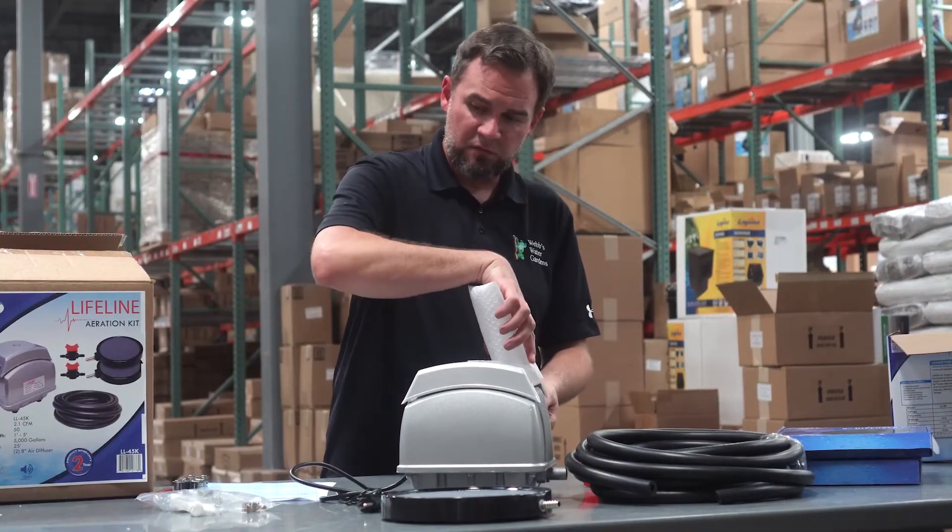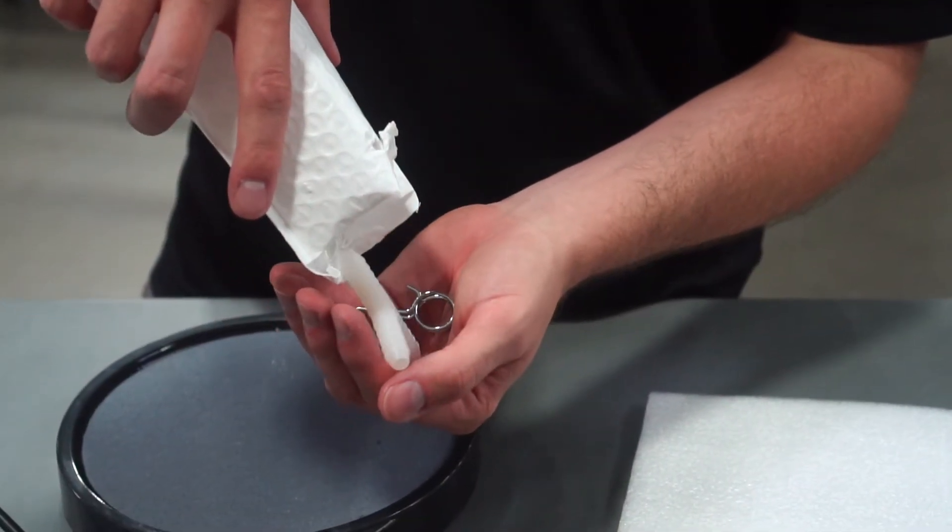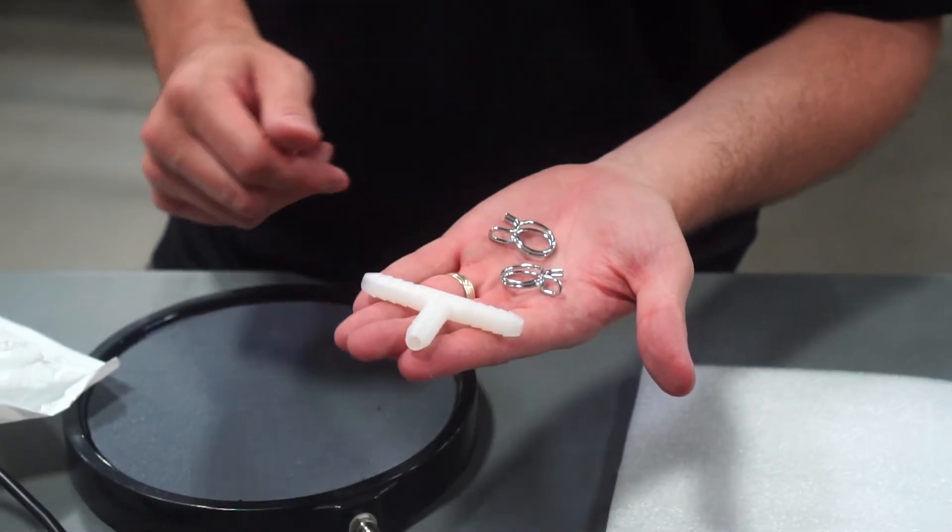In this bag, you have your T-fitting. So you actually cut this tubing, split the lines two ways to each diffuser. Then you have your spring clamps.